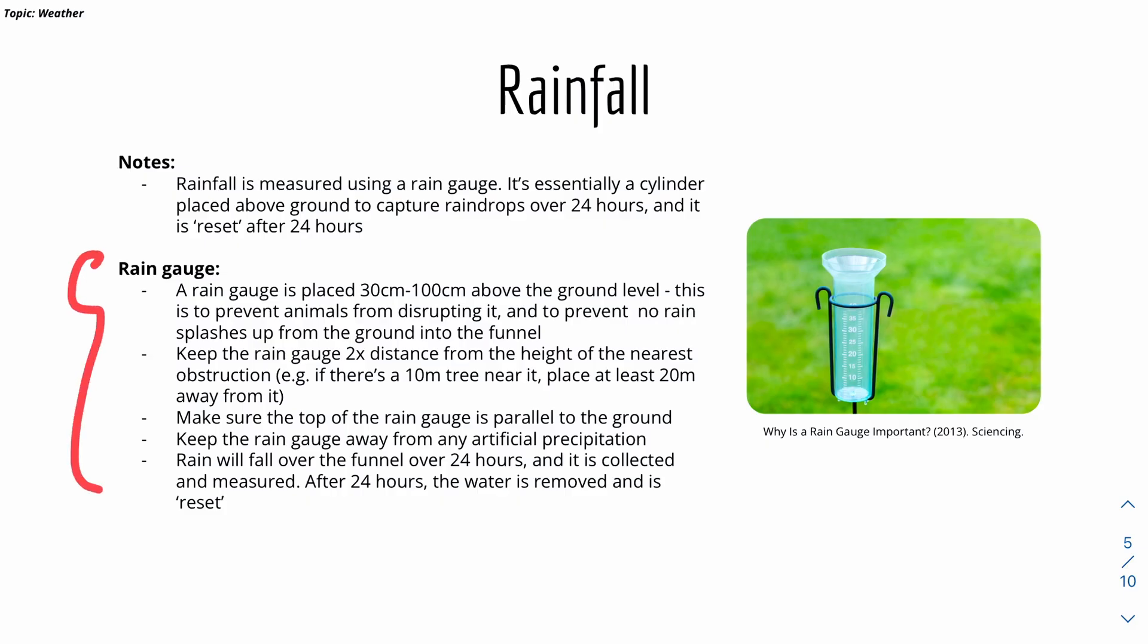Here are some more notes on rain gauge. A rain gauge is placed around 30cm to 100cm above ground level. There are multiple reasons for that. For example, to prevent animals from disrupting or tampering with it. And also to prevent rain from splashing up from the ground to the funnel, which will affect the reading.